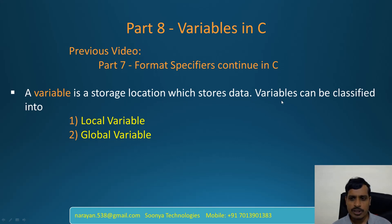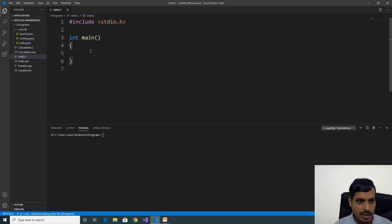Variables can be classified into local variables and global variables. We will discuss variables using VS Code — launch VS Code and create a C application. Here we will declare variables.